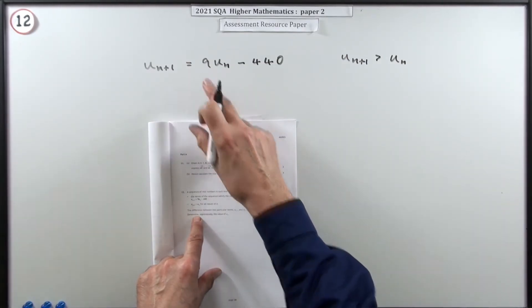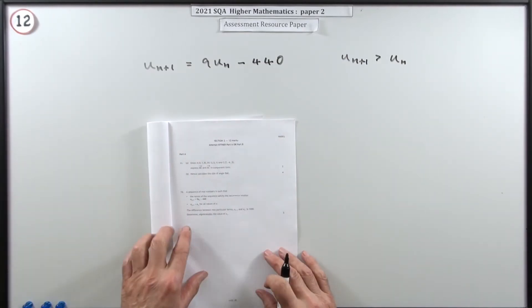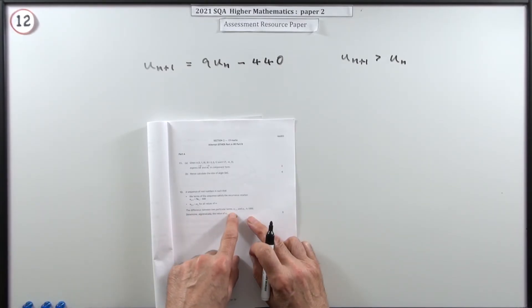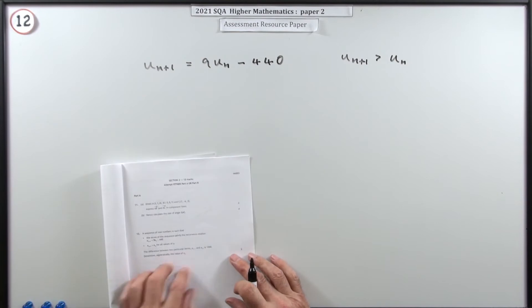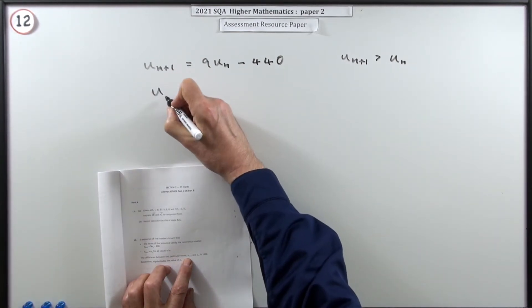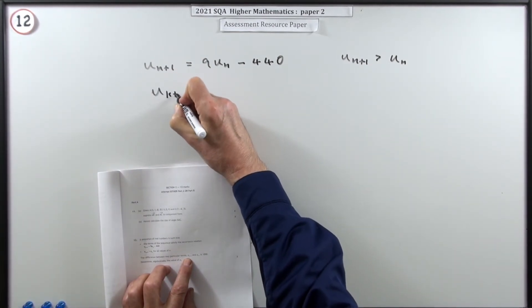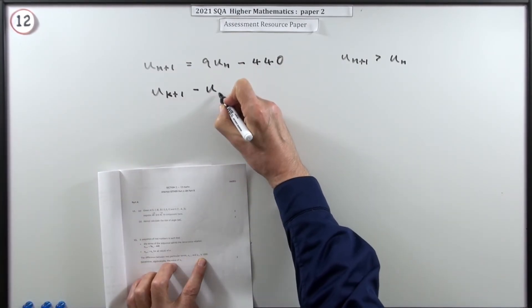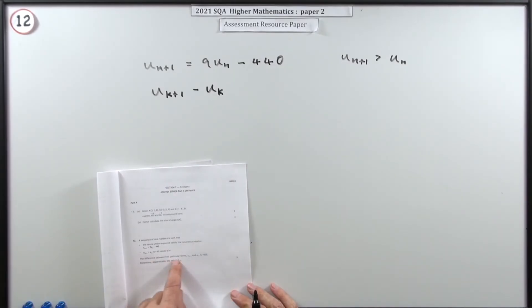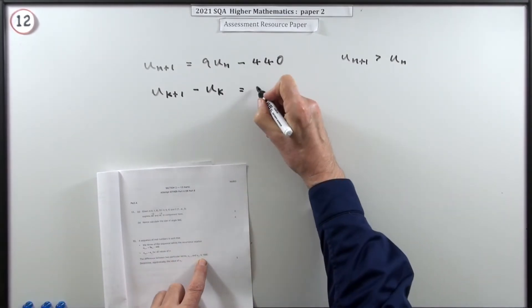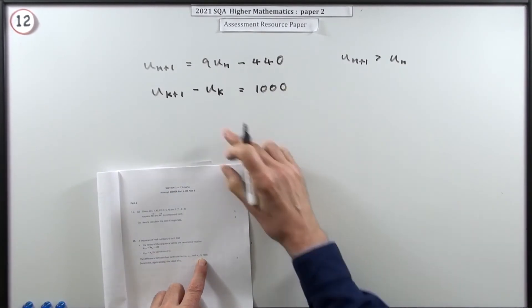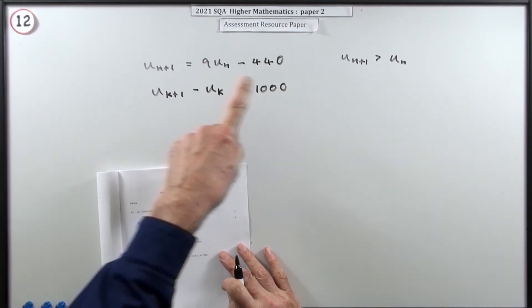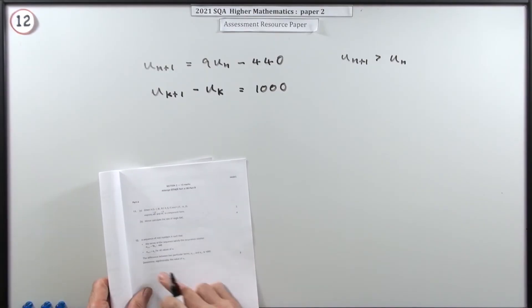What does it say? The difference between two particular terms is a thousand. I better put that down then. I'm using a K here to identify one of the terms, so U_k+1 if you take away U_k, because it says the difference between two terms, that comes to a thousand. So which term was that, so that it was a thousand to get to the following term? You have to determine this algebraically.